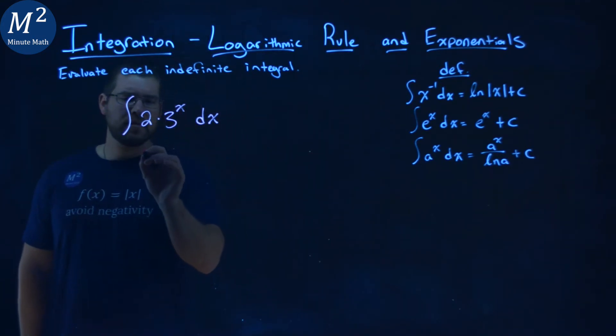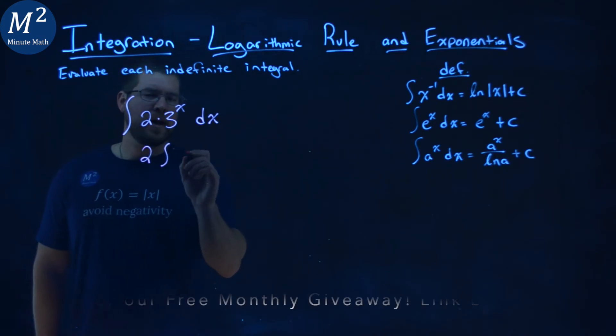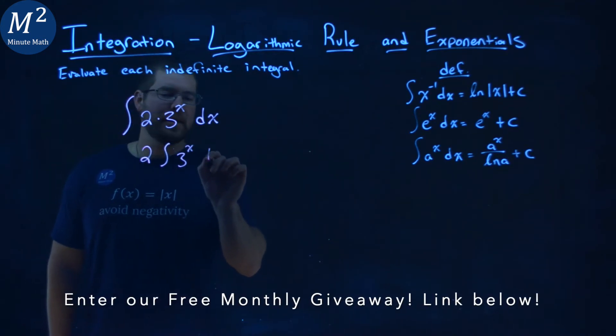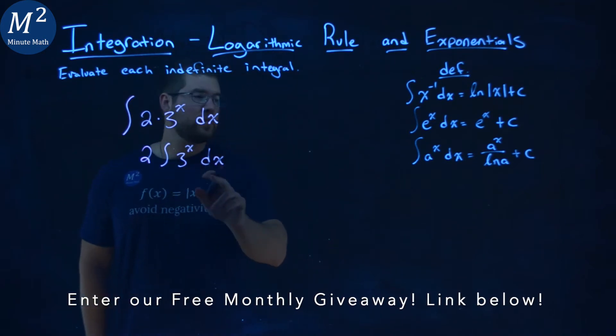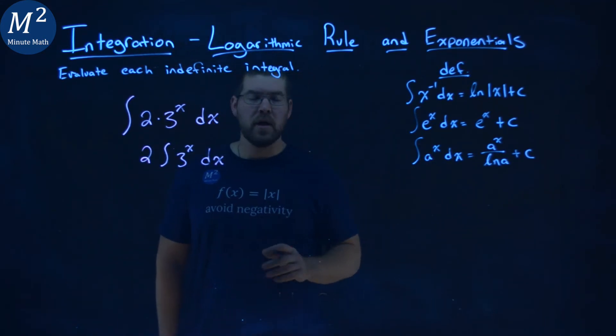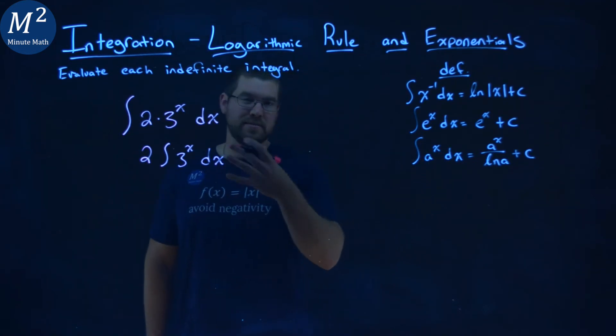So, pull out that constant of 2, and I have the integral now of 3 to the x power dx. Now, this looks just like our a to the x power. So, we're going to use our definition here to solve this.